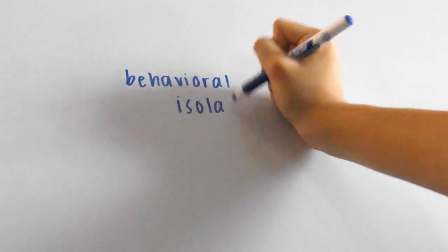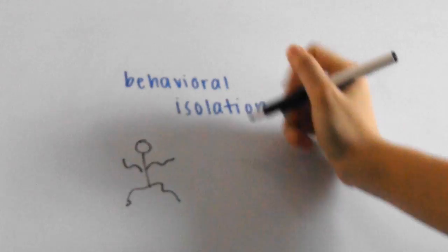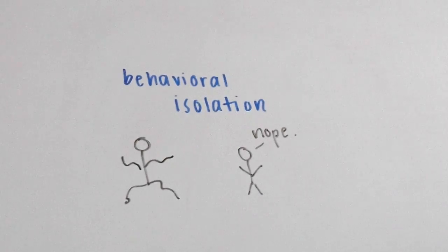Third of all, behavioral isolation is when courtship rituals or other animal behavior prevent fertilization, like this failed mating dance.